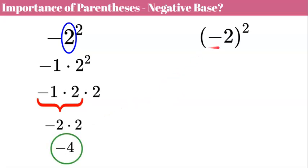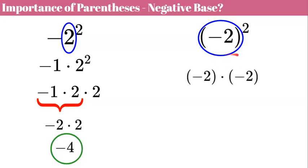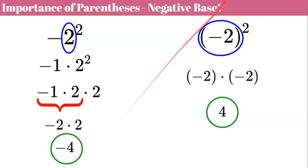With parentheses, everything inside has the power of two. So negative two is our base, and the negative sign is part of the base. This becomes negative two times negative two. When we multiply, we get positive four. So without parentheses the expression equals negative four, but with parentheses around the base the expression equals positive four — be very careful about whether the base is in parentheses.